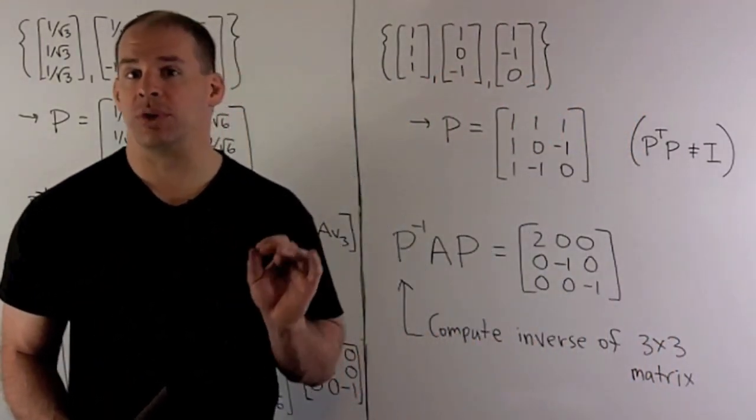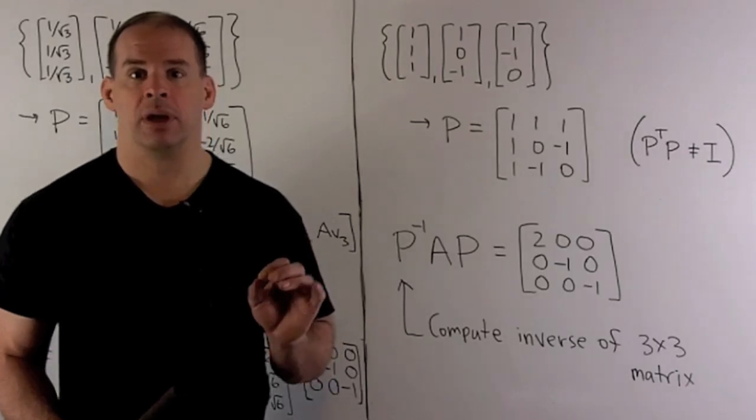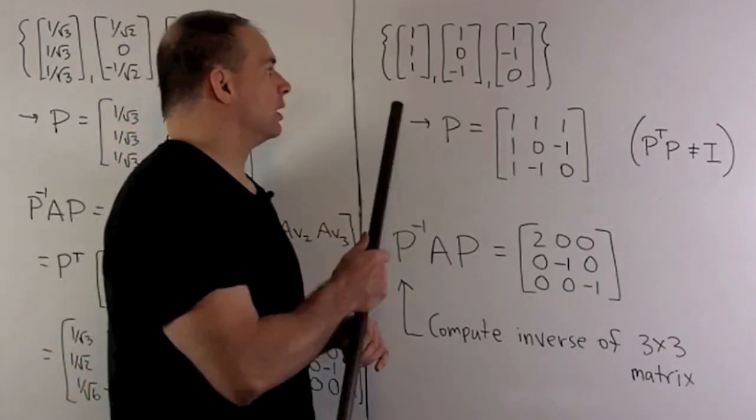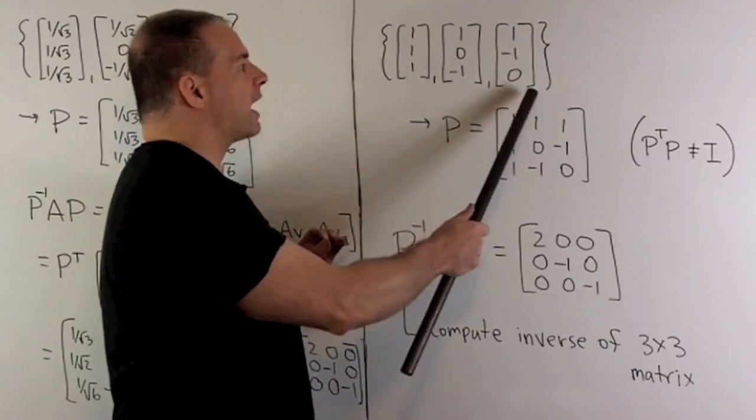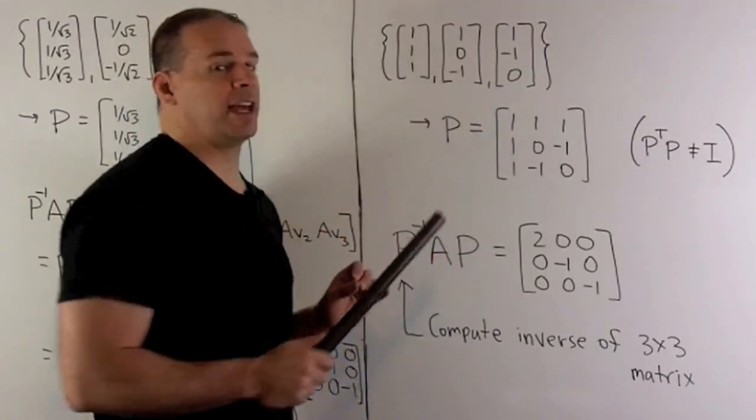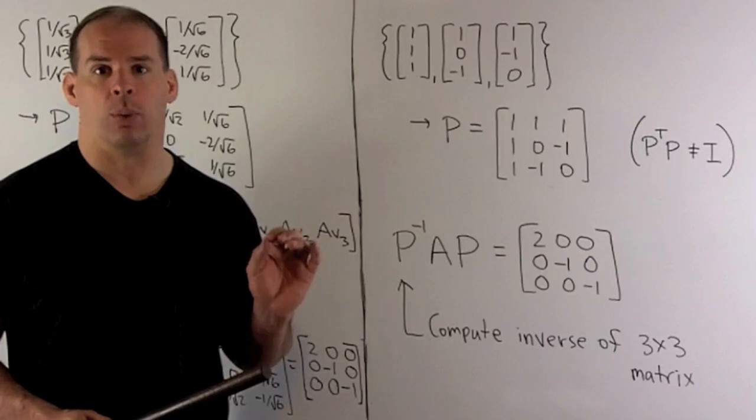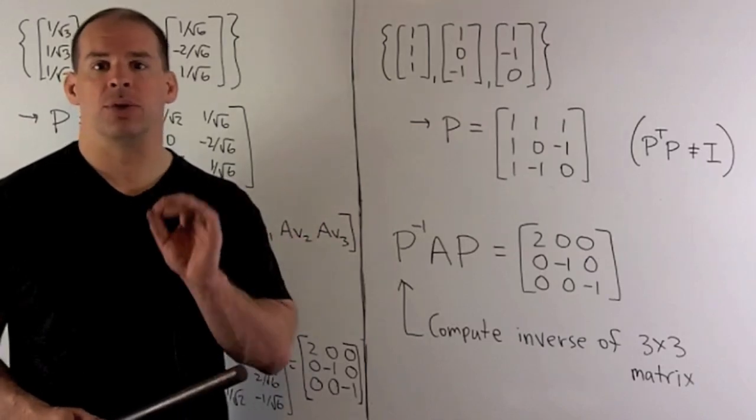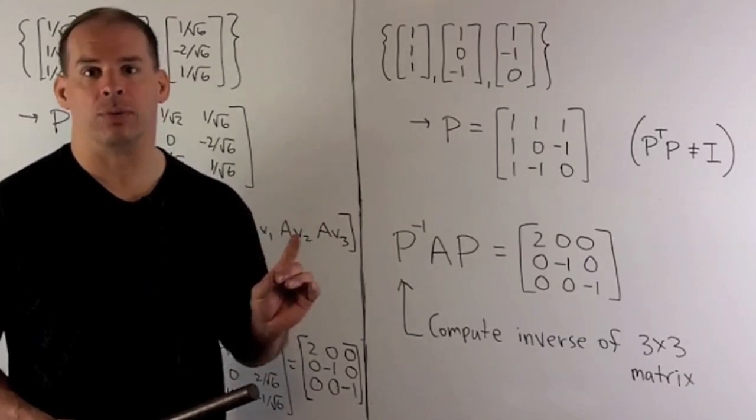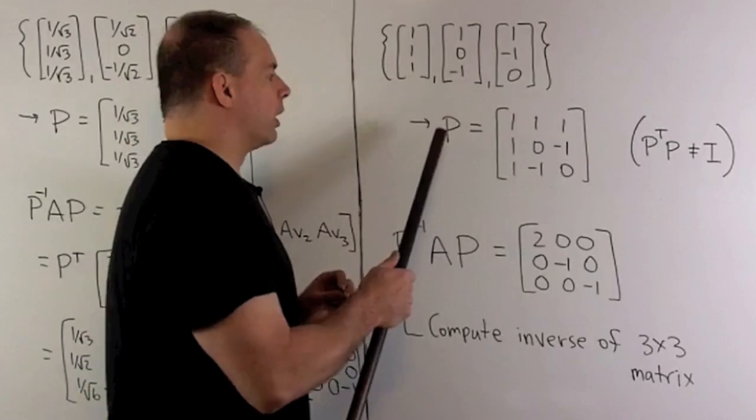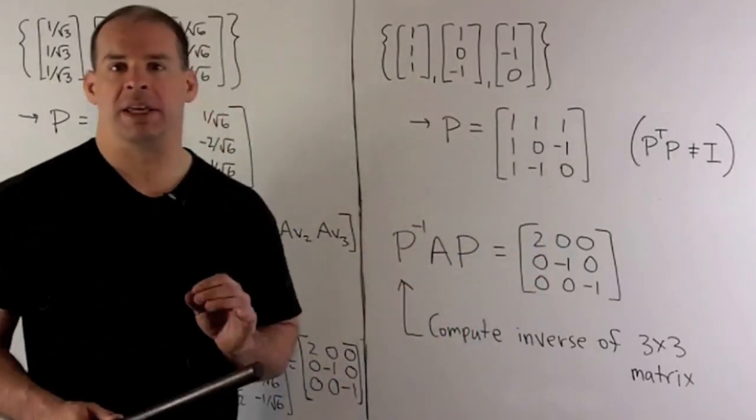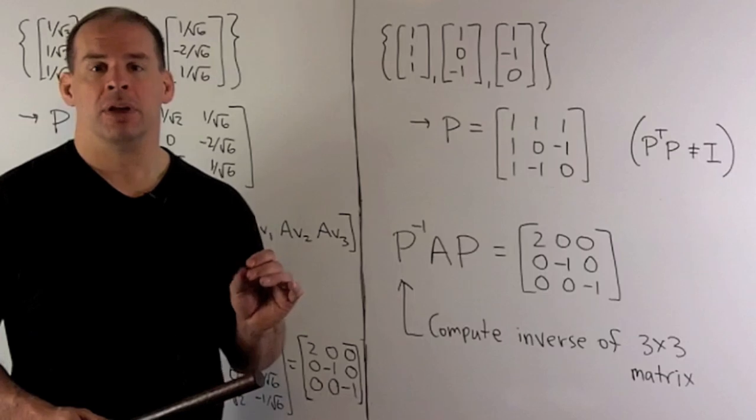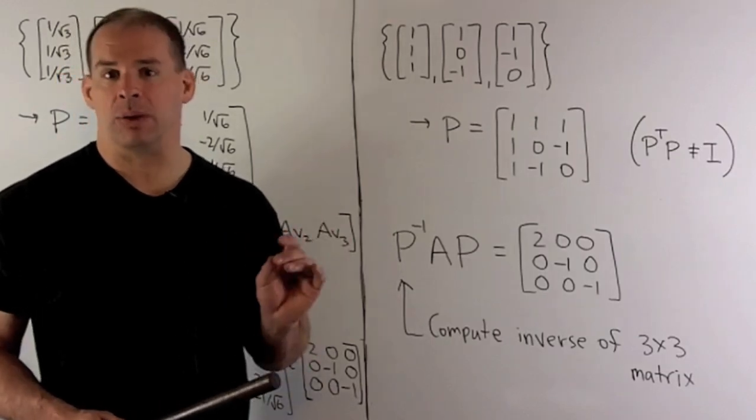What happens if we don't use the orthonormal basis? We could have stopped with the basis here. In this case, we don't have unit vectors, and V2 and V3 are not orthogonal. They're inner product equal to 1. We could still use this basis to put our matrix in diagonal form. We'll get our matrix P. Note, P transpose times P is not equal to the identity. So P inverse is not going to be equal to P transpose.